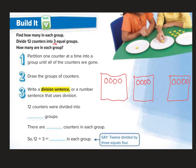So if I have 12 counters and I'm dividing them into 3 groups — here are my 3 groups — I would get 4 counters in each group. So 12 counters were divided into 3 groups. There are 4 counters in each group. So 12 divided by 3 equals 4.